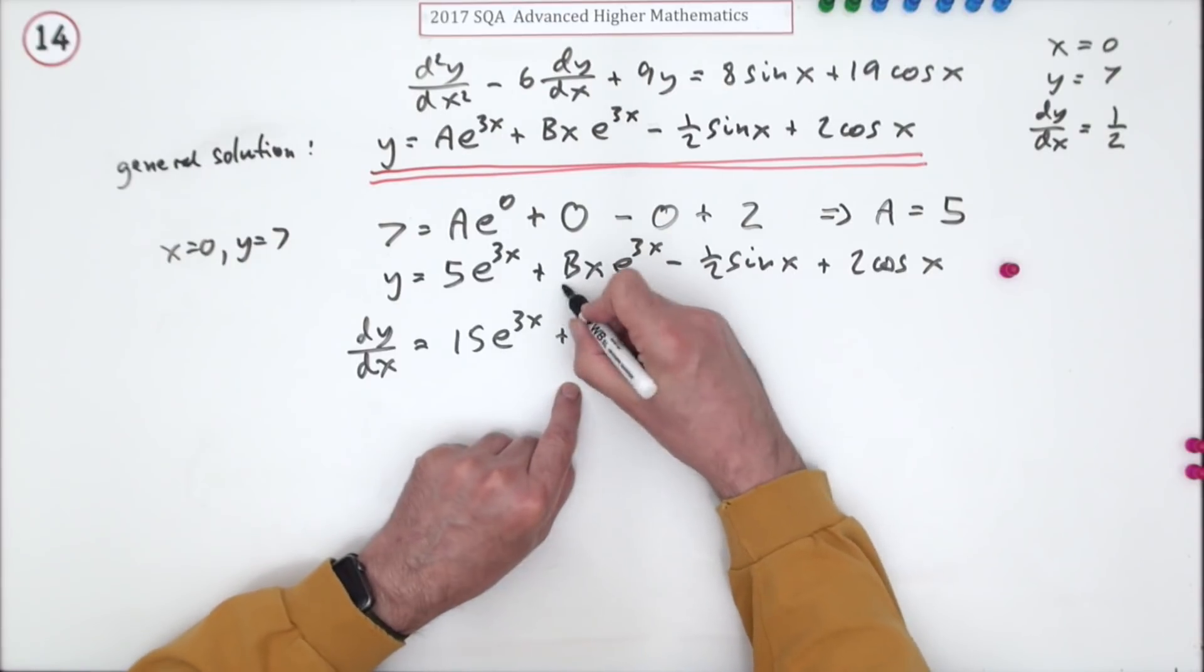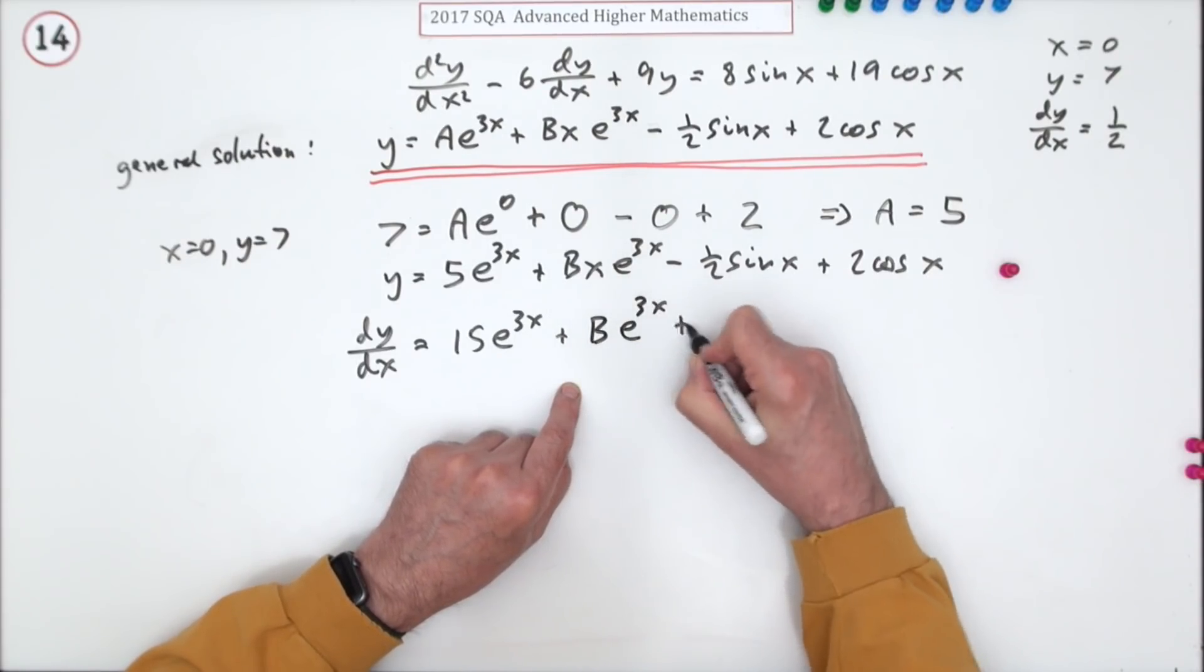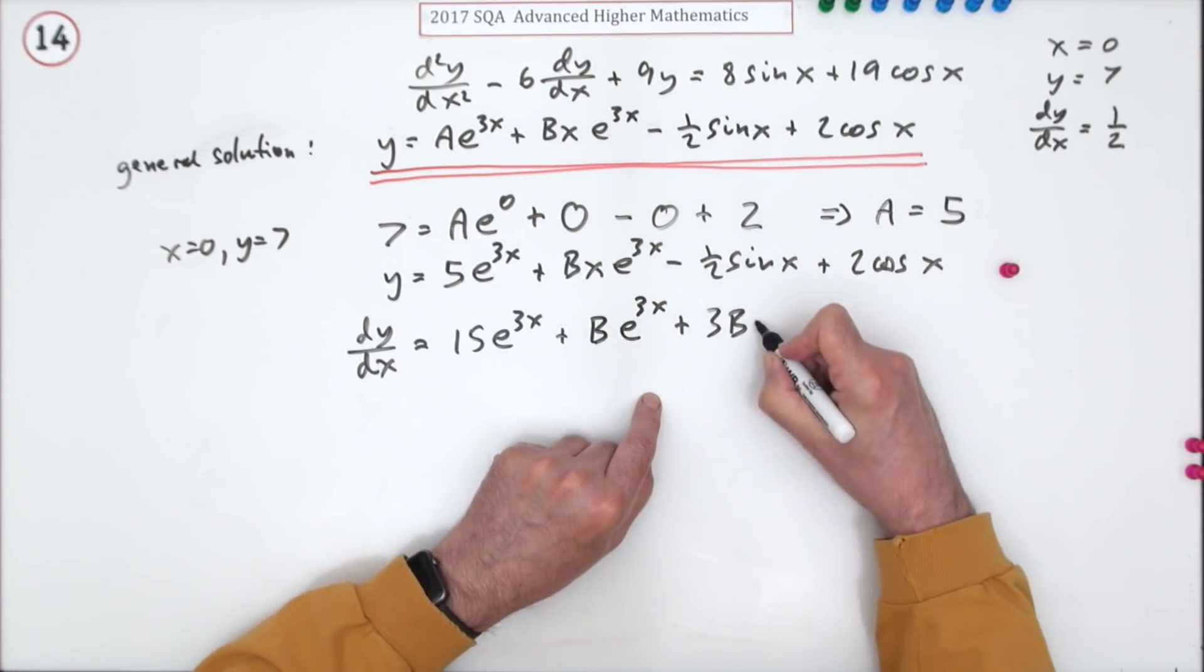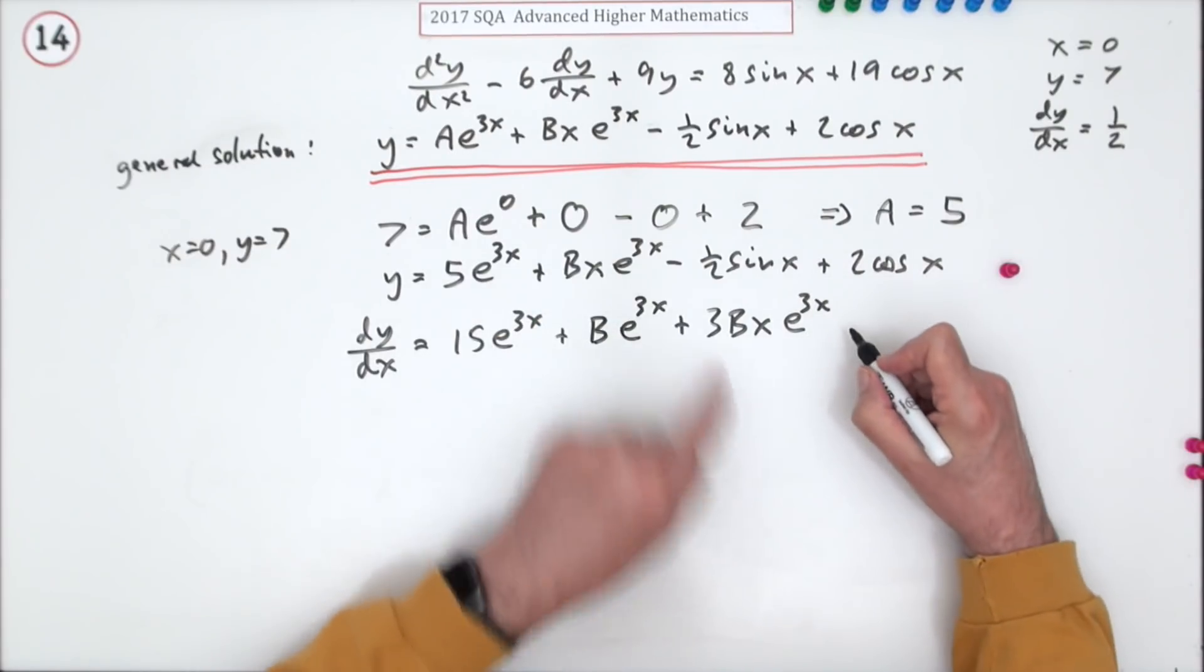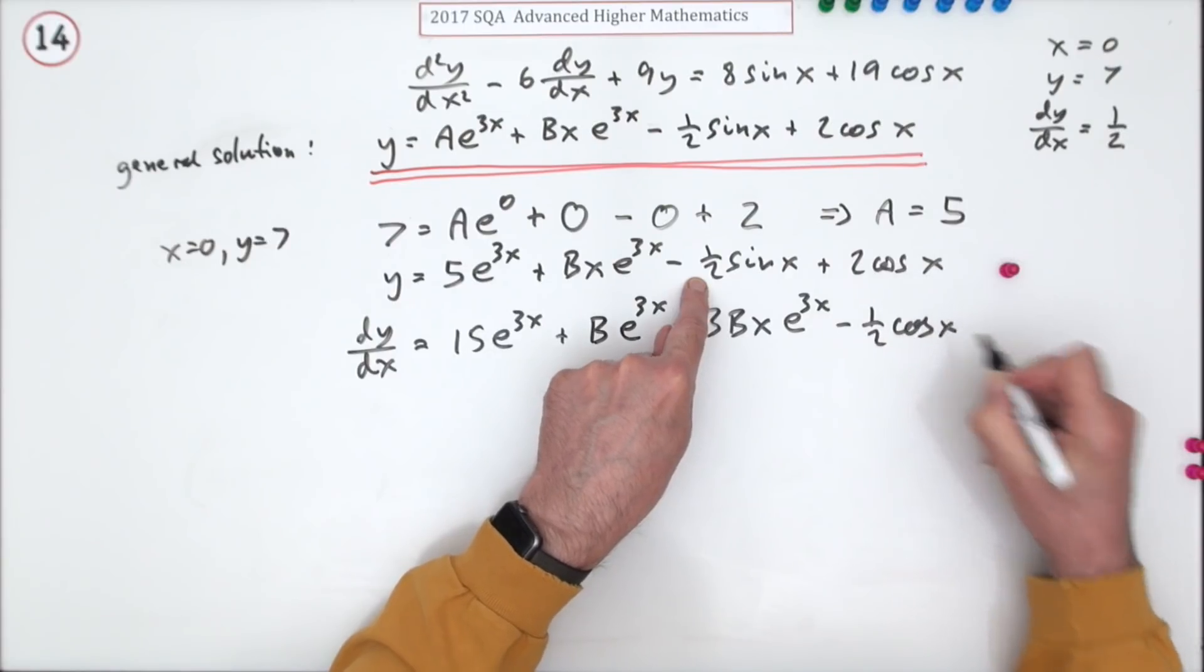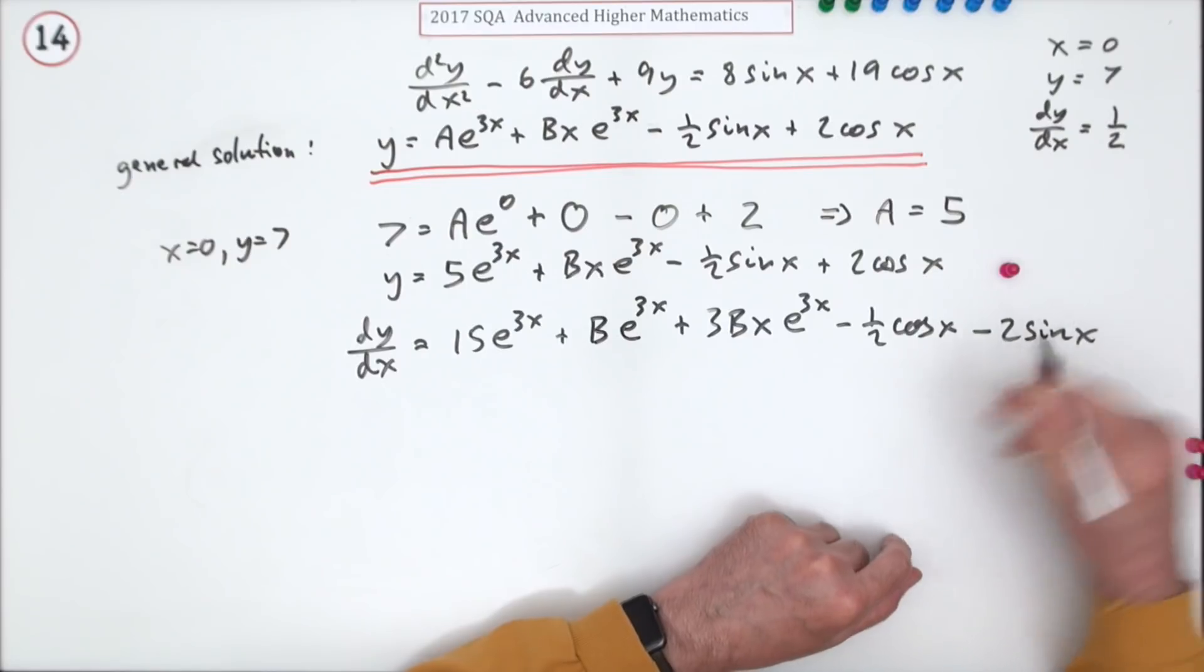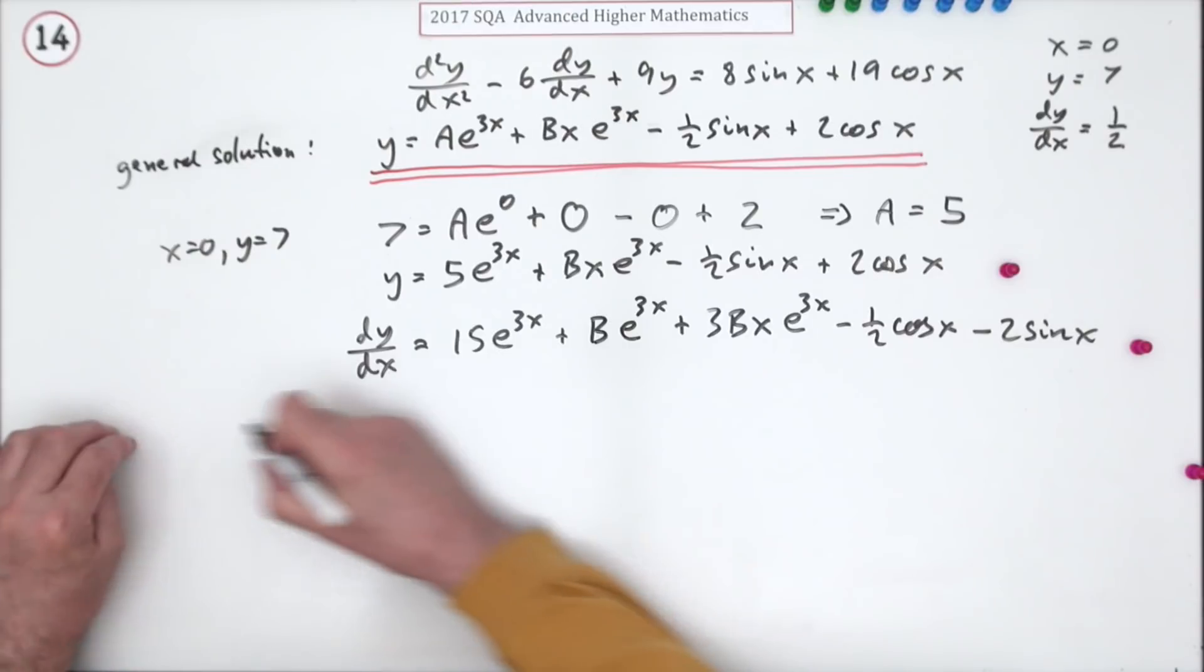So that's going to be plus, differentiating the Bx gives a Be^(3x), plus now multiplying by that 3, 3Bxe^(3x) - that was the product rule there. Minus a half sine becomes minus a half cos, and 2 cos becomes minus 2 sin x. Doing that was worth a mark.